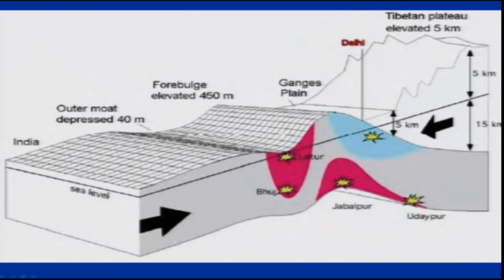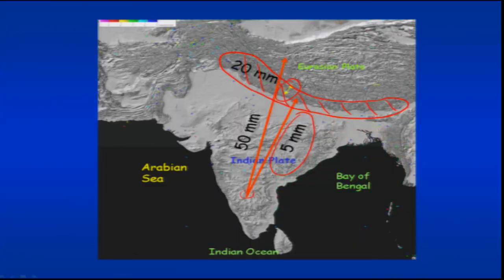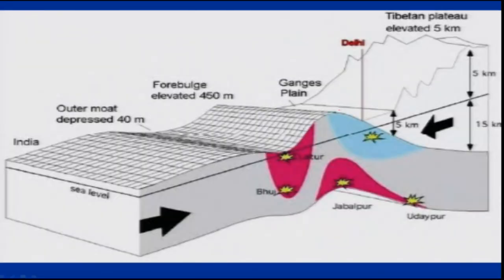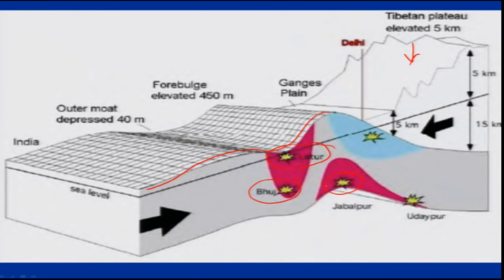Not only the Himalayan part is experiencing deformation — the rest of the Indian plate is also under deformation. This cartoon explains that not only the Himalaya but also the rest of the Indian plate is getting flexed up, which is one reason why we had earthquakes in Bhuj, Latur, and Jabalpur — all on the peninsular side. We will discuss faults and ancient and present earthquakes in the Himalayas in more detail later.